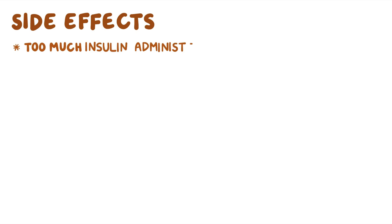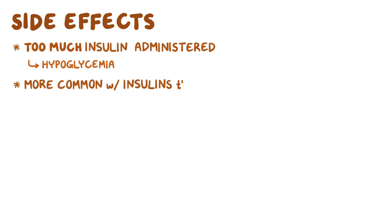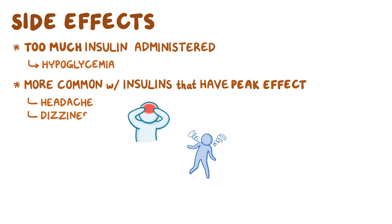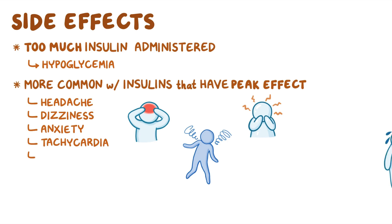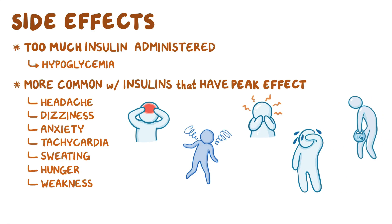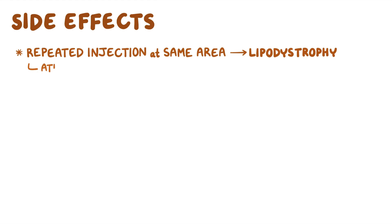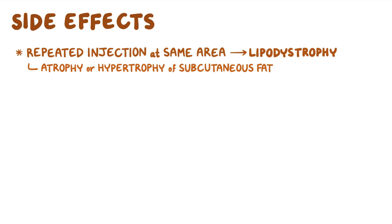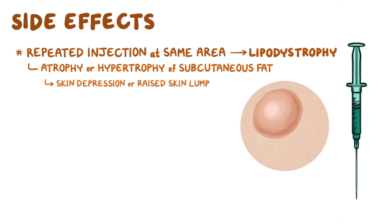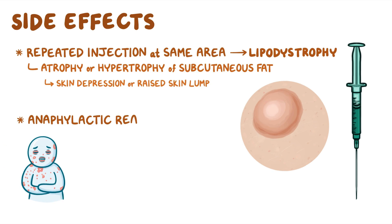The main side effect of insulin therapy arises when too much insulin is administered, leading to hypoglycemia. This is more common with insulins that have a peak effect. Symptoms of hypoglycemia include headache, dizziness, anxiety, tachycardia, sweating, hunger, and weakness. Repeated insulin injection at the same area can also lead to lipodystrophy, presenting as atrophy or hypertrophy of subcutaneous fat — either a skin depression or a raised lump. Some clients may also develop anaphylactic reactions.